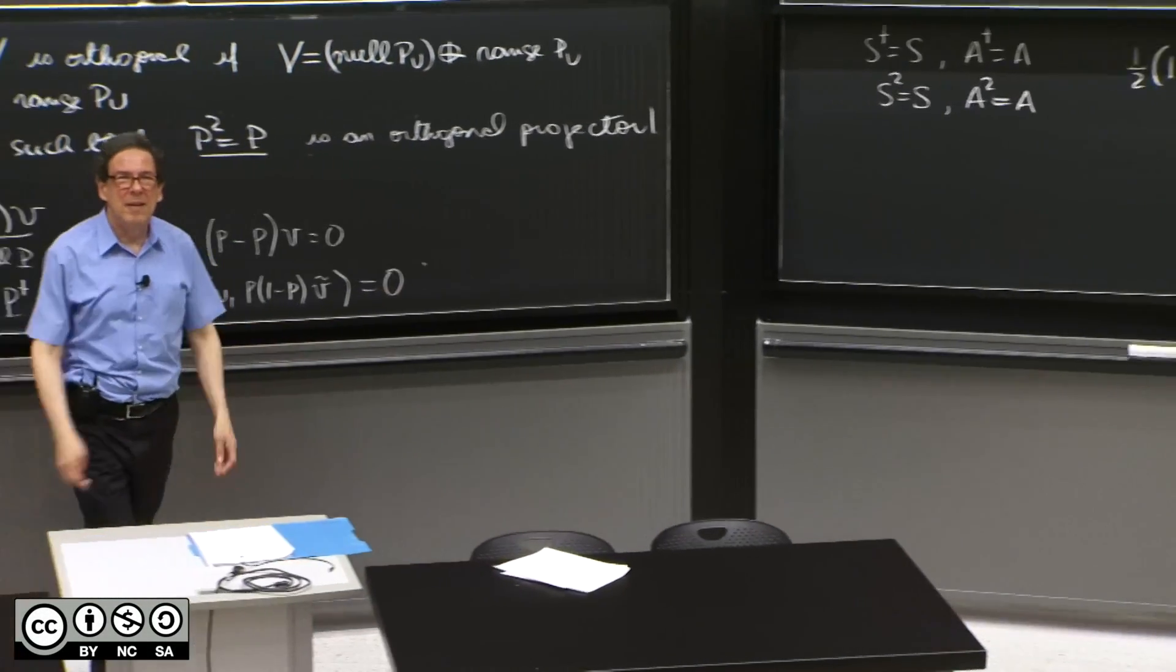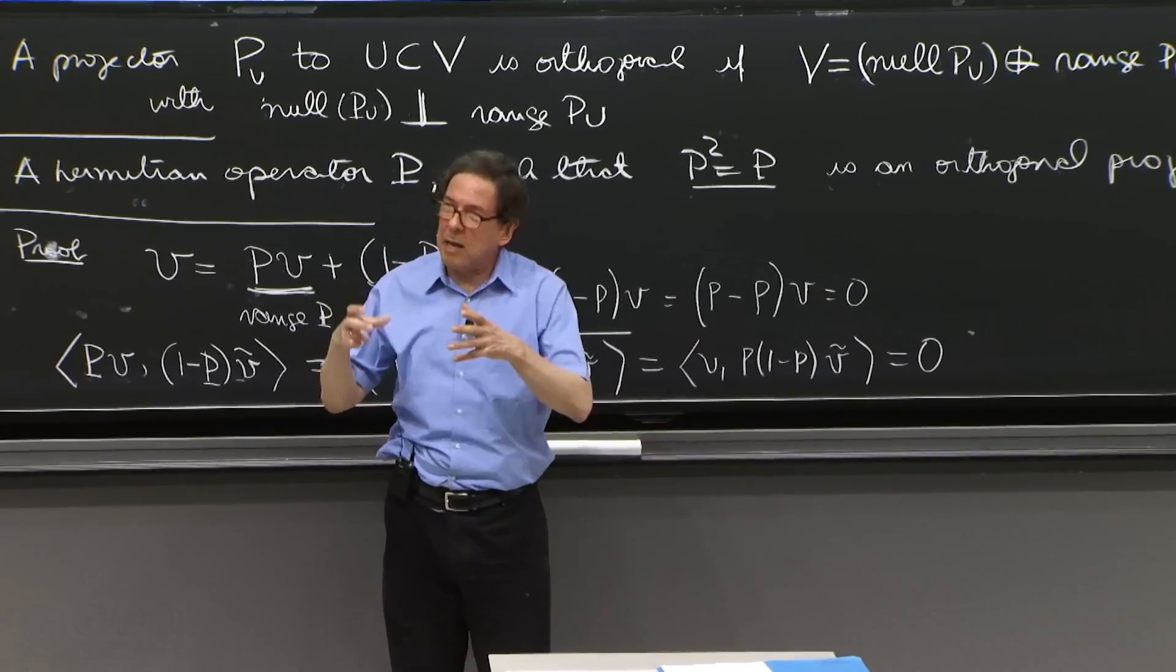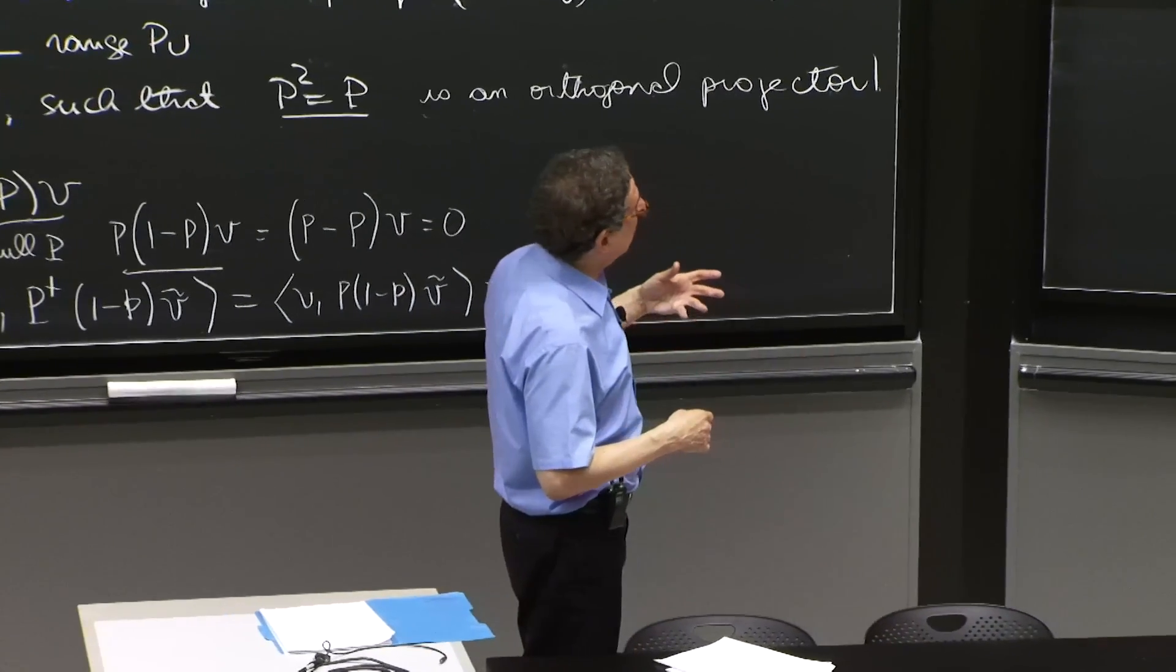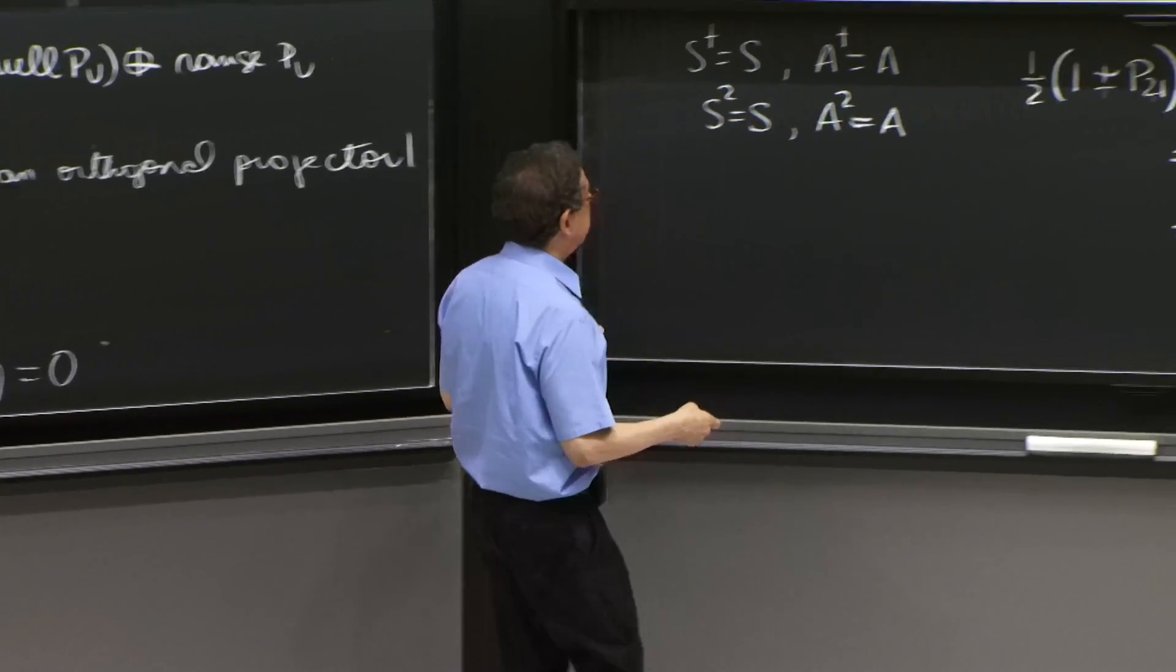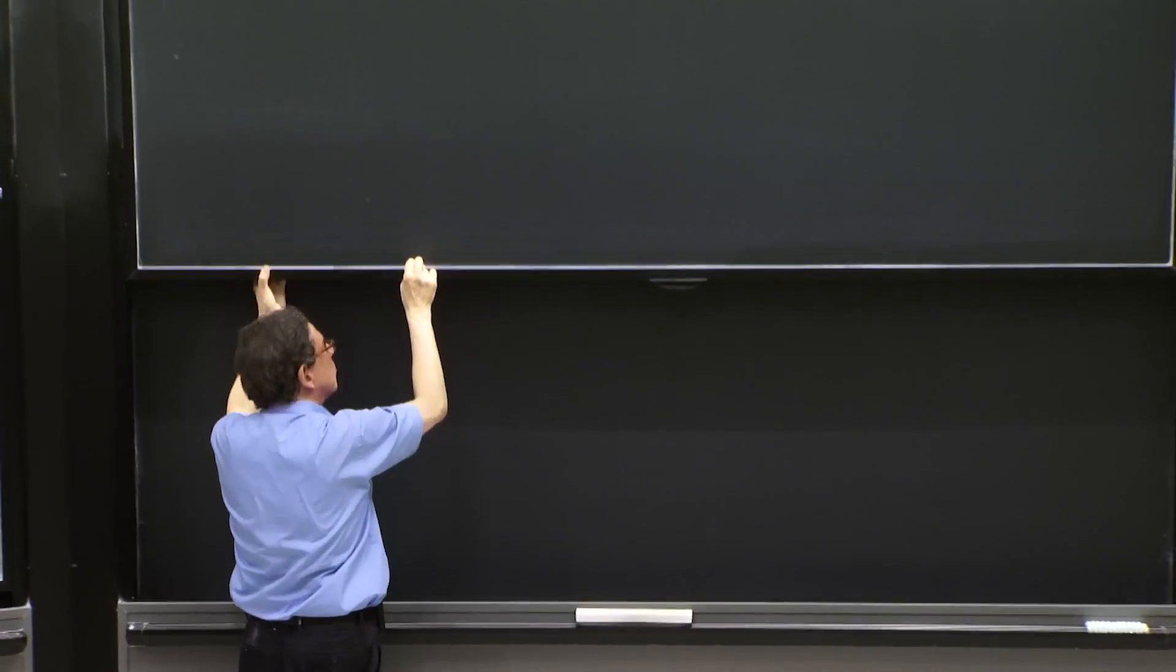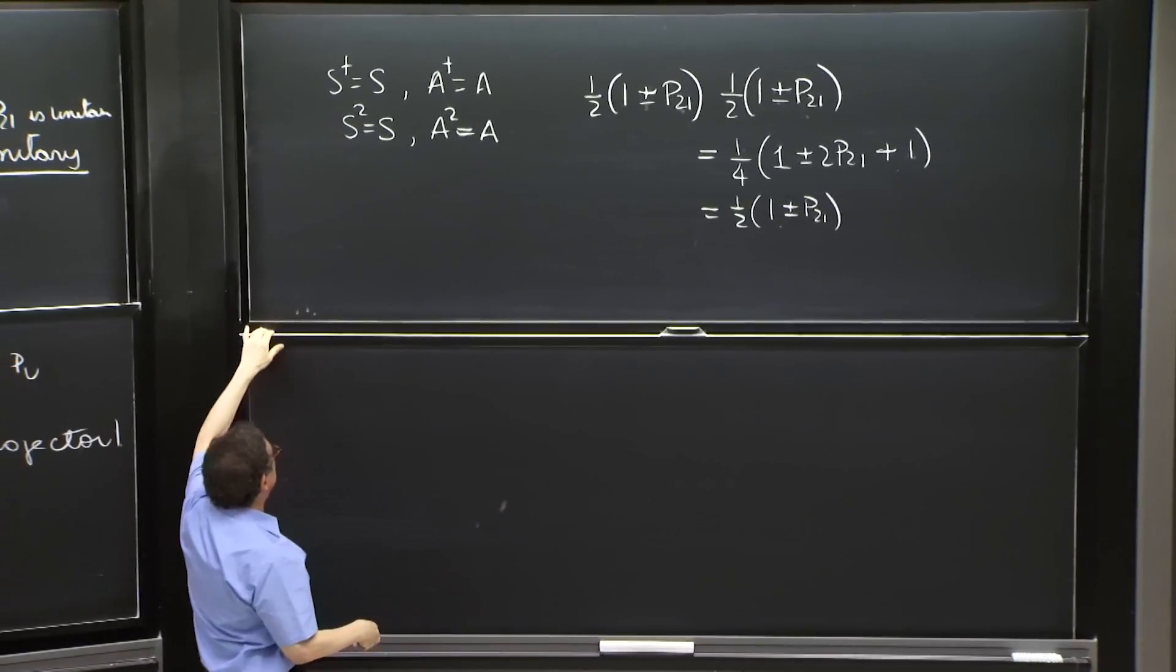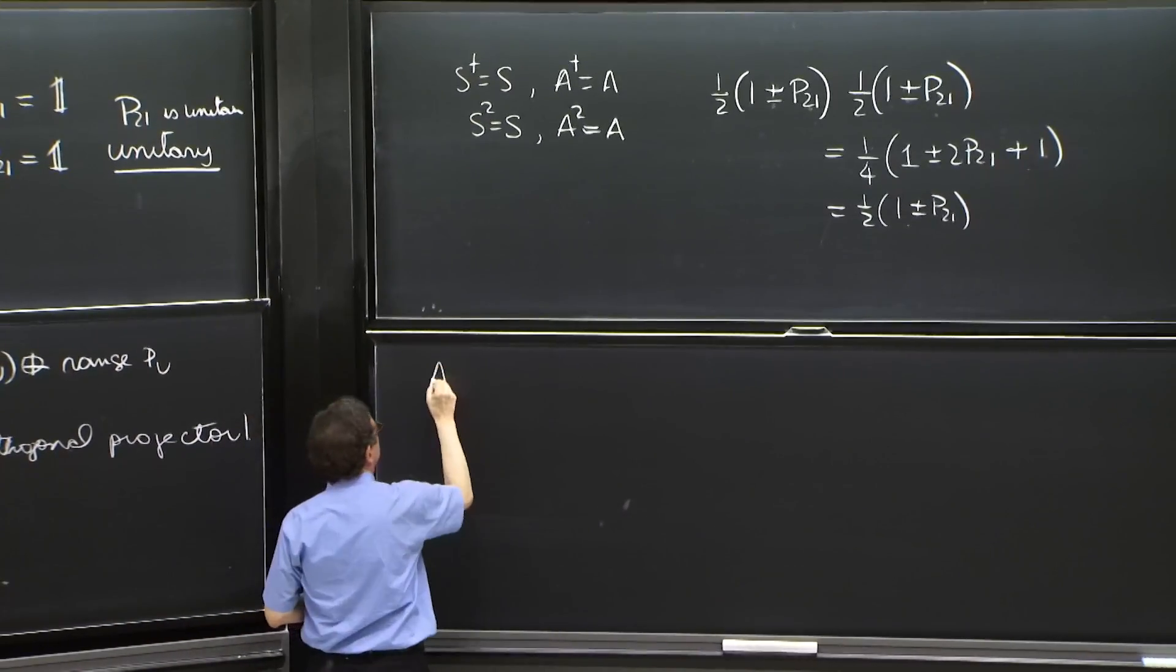So one more thing, let's do with this operator. We're getting accustomed to these operators. And they can, these permutation operators, can also act on operators themselves. So that's important. So consider the action on operators.